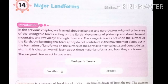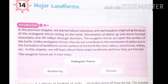Movements of plates up and down form mountains and rift valleys. As I've told you, lithospheric plates are moving, and the movement of plates up and down forms mountains. When plates move up and down, they form mountains and rift valleys. Rift means crack — a crack in the earth's surface.